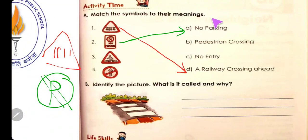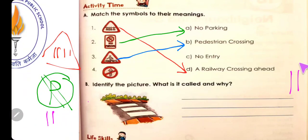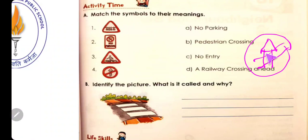This boy is crossing the road. जो person walk करता है उसको pedestrian बोलते हैं। So this symbol is for pedestrian crossing - pedestrian मतलब पैदल चलने वाला। And the last one: there is an arrow, and the arrow को cross करते हैं। इसको no entry बोलते हैं - उस जगह पर हम गाड़ी नहीं ले जा सकते। This means no entry.